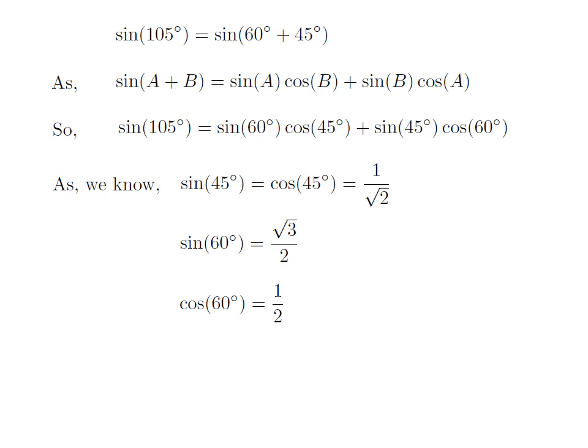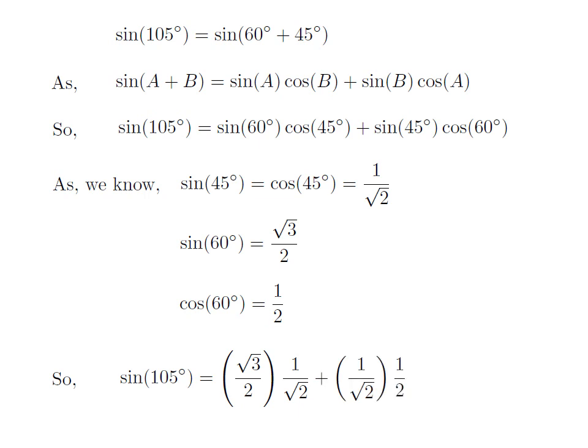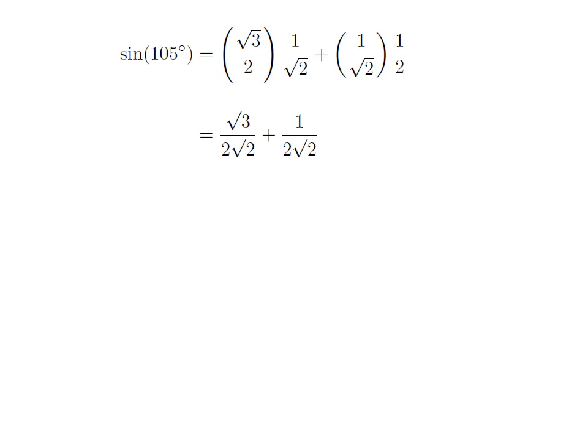So we replace these values in the above formula. After substitution, we get sine of 105 degrees is equal to square root of 3 upon 2 into 1 upon square root of 2, plus 1 upon square root of 2 into one half. Simple fraction multiplication gives us sine of 105 degrees equal to square root of 3 upon 2 square root of 2, plus 1 upon 2 square root of 2.